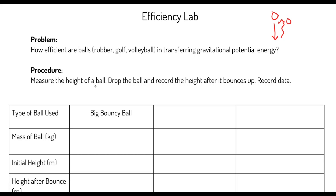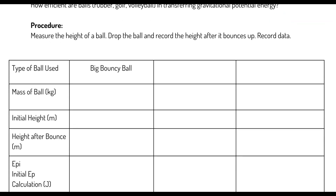So we measure the height of the ball, drop the ball, and record the height after it bounces back up. We're also going to need the mass of these balls. The example I'm going to talk about is a big bouncy ball, and then you'll have your choice of six other balls to choose from. The best way to explain it is just by showing it, so let's dive right in.